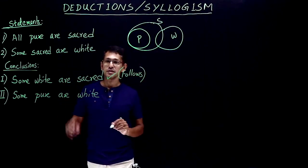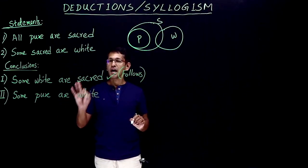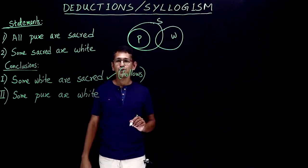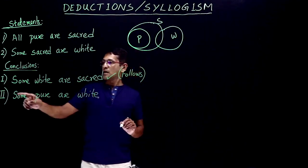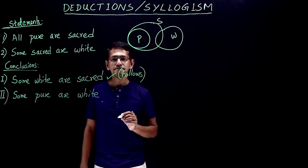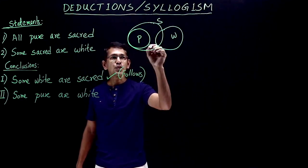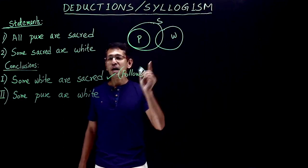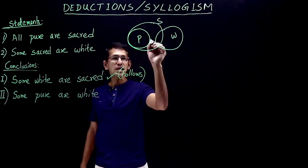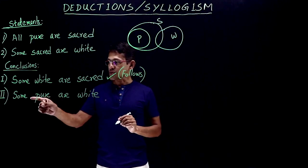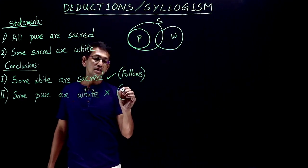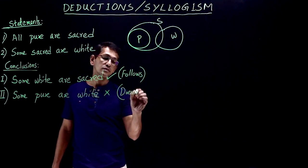It follows the statements — that is what you have to find: whether every conclusion follows or not. Second conclusion: some pure are white. In the basic diagram, pure is not intersecting with white, because the statement doesn't say pure intersects white. So the second conclusion is invalid in the basic diagram — it doesn't follow.